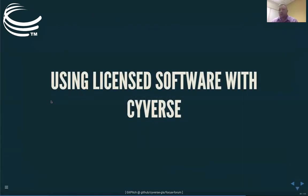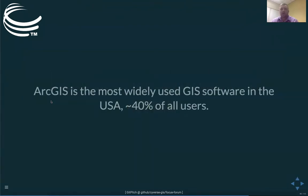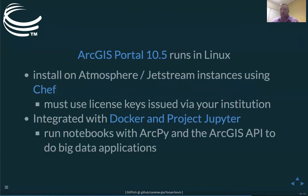Regarding licensed software on the cloud and specifically on CyVerse: ArcGIS is used by up to 40% of users out there and requires a license. The new ArcGIS Portal 10.5 can run on Linux, so you can install a portal on CyVerse Atmosphere or Jetstream. That's not necessarily ideal because portal is meant to run on a server permanently, while most virtual instances are ephemeral — you set them up, run them, and turn them off when you're done. But you can bring your own license keys and run these things on environments if you need to. The example I'm going to give is running the ArcGIS API for Python — Jupyter notebooks using Docker on an Atmosphere instance.